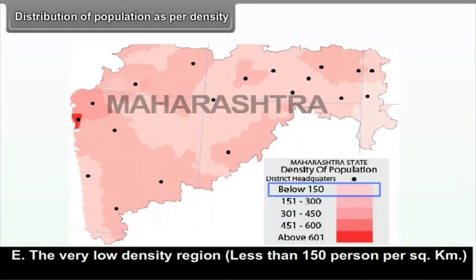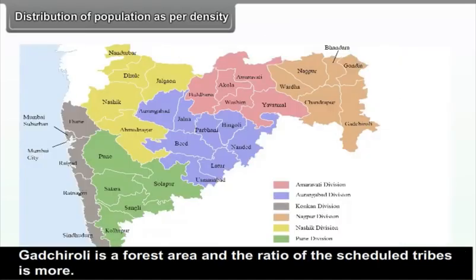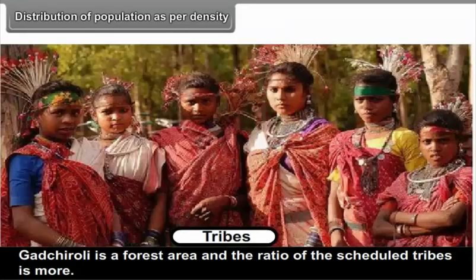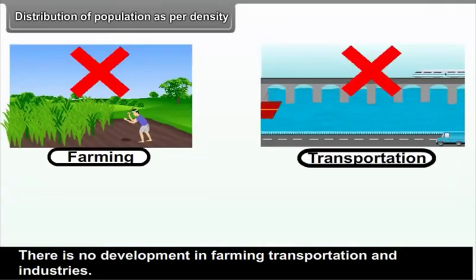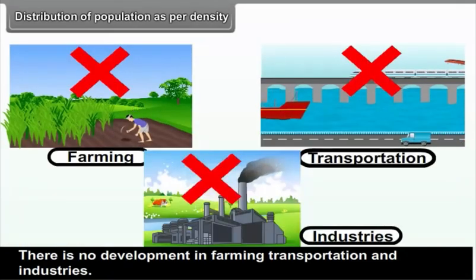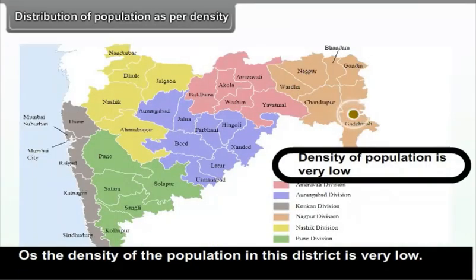(E) Very Low Density Region — less than 150 persons per square kilometer: Gadchiroli is a forest area with a high ratio of scheduled tribes, and there is no development in farming, transportation, or industries, so the density of population in this district is very low.